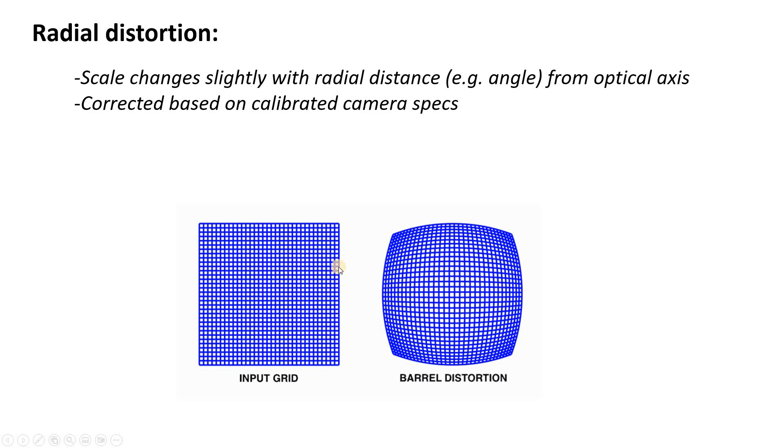So what this grid shows is the actual area that a ground unit might take up on the ground. And then this grid shows the proportional area that it might take up in your image after it has been distorted. So obviously a radial correction would attempt to restore each of these elements back to its original size. And that is done using calibrated camera specs. So every camera has specifications for radial distortion and it's a fairly straightforward correction.